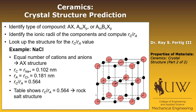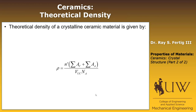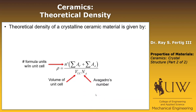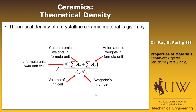Just like we did for metals, we can use the crystal structure of ceramics to compute the theoretical density. The formula is very similar with a little additional complexity. In this formula, n′ is the number of formula units within the unit cell — for NaCl, that's how many NaCl formula units are in the cell. VUC is the volume of the unit cell, NA is Avogadro's number, the sum of A_A is the sum of all anion weights in the formula unit (for NaCl, just the atomic weight of Cl), and then we have the cation weights — for NaCl, just the weight of sodium.